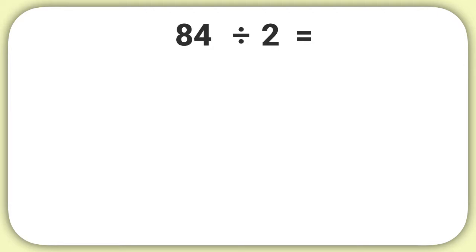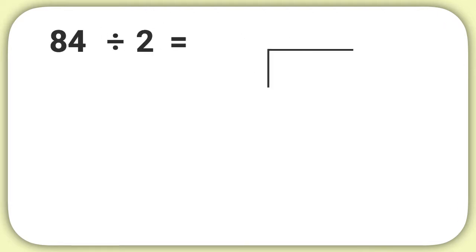To start, draw out lines like these, then put the number we are dividing — the 84 — inside of the symbol, and the number we're dividing by — the 2 — on the outside.